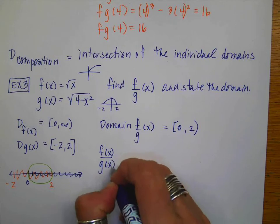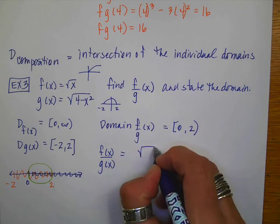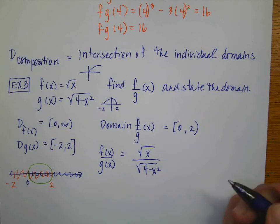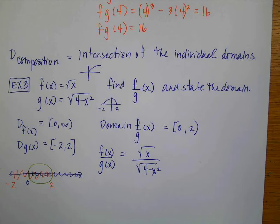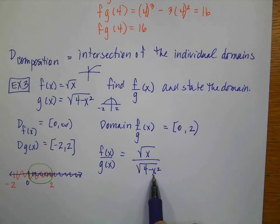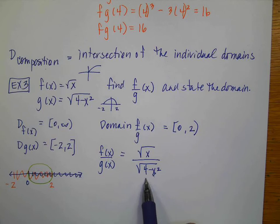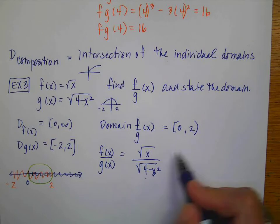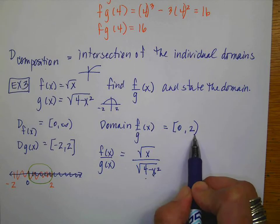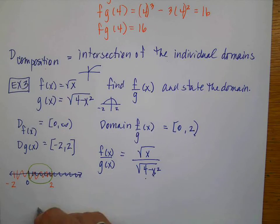Now let's compute (f/g)(x): that's √x divided by √(4 − x²). It's fine to leave it as is. Here's why 2 is not included: if I plug in 2, I get 4 − 4 = 0 in the denominator. I can take √0, but I can't divide by 0 because the world explodes. So even though the numbers range from 0 to 2, the value 2 can't be included.